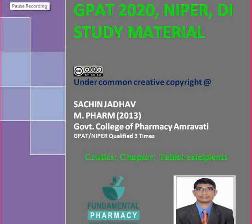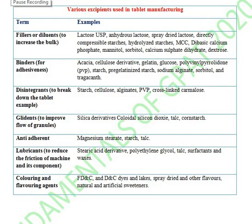Hello friends, welcome to the Fundamental Pharmacy. Today we are going to discuss about tablet excipients — the various types of excipients used in tablet manufacturing. We have different kinds: diluents, binders, disintegrants, glidants, anti-adherents, lubricants, and coloring and flavoring agents. Let's see them one by one.